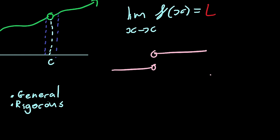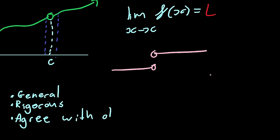And finally, very importantly, it had to agree with the old definition — in its general sense. You and I and everyone in the world pretty much agrees that the limit as x approaches 2 of x² is going to equal 4. So the mathematician's new definition still had to agree with that notion of getting really, really close.